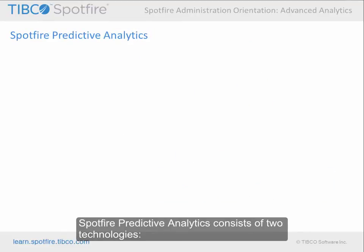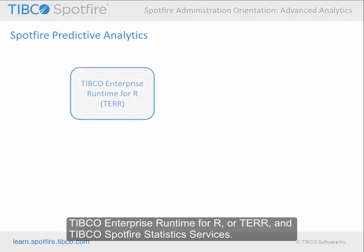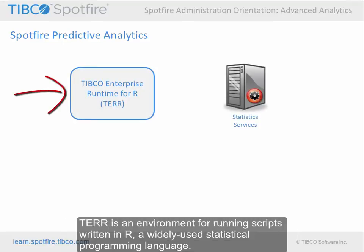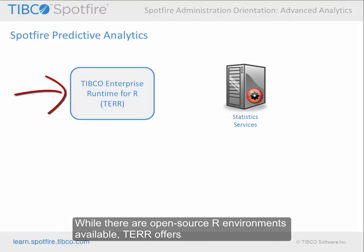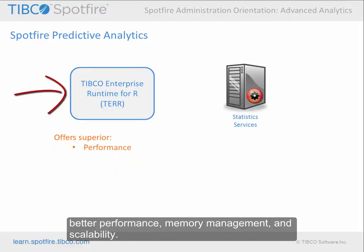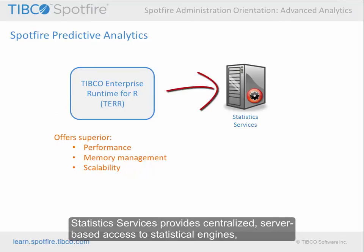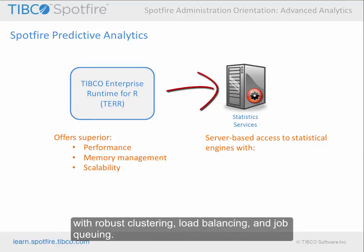Spotfire Predictive Analytics consists of two technologies: TIBCO Enterprise Runtime for R, or TAIR, and TIBCO Spotfire Statistics Services. TAIR is an environment for running scripts written in R, a widely used statistical programming language. While there are open source R environments available, TAIR offers better performance, memory management, and scalability. Statistics Services provides centralized server-based access to statistical engines, with robust clustering, load balancing, and job queuing.